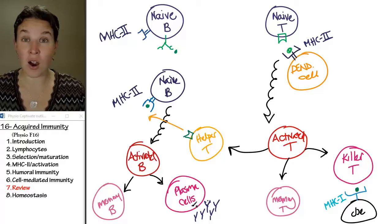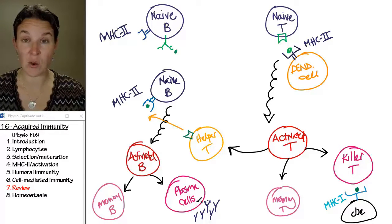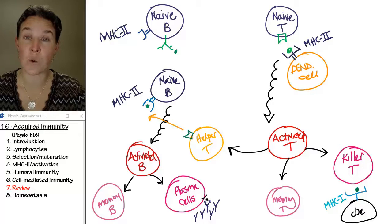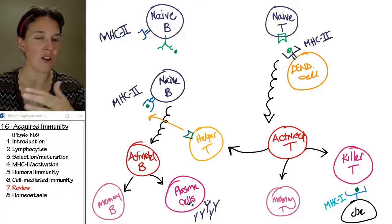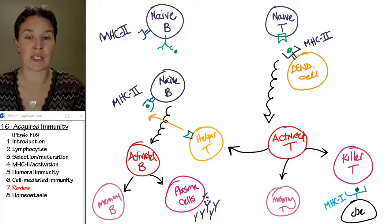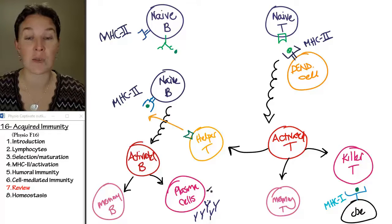Antibodies can act as opsonins, so they can act as triggers for phagocytosis, so that our nonspecific phagocytes can just go around and yumptialize things that have antibodies stuck to them.